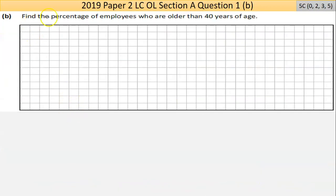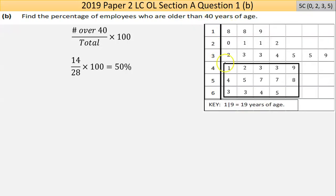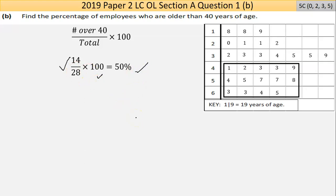Part B says: find the percentage of employees who are older than 40 years of age. I've taken a screenshot of the data from the previous question and highlighted all the people who are in their 40s. I count up how many there are — there are 14 — out of a total of 28 people. So I create the fraction, multiply by 100 to make it a percentage, and I got 50%. Happy days.